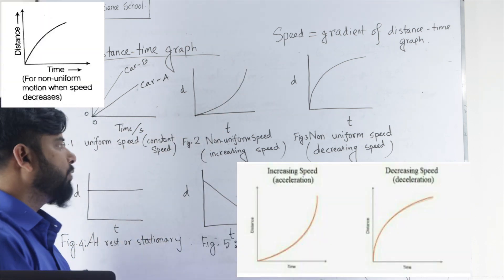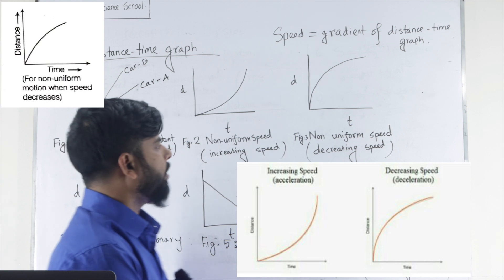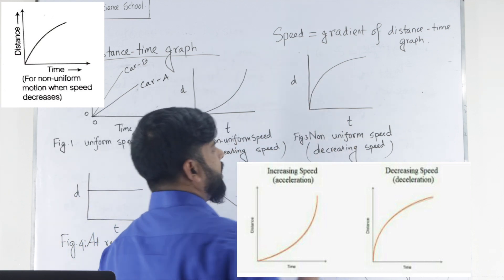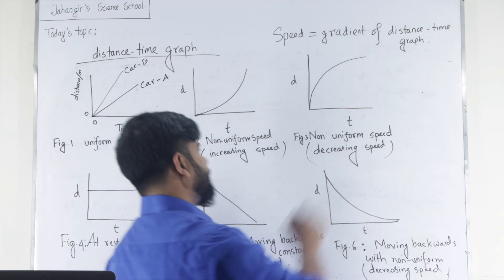So, increasing speed. Figure 3, it is also non-uniform speed, but gradient of the distance time graph decreases gradually. That's why decreasing speed.